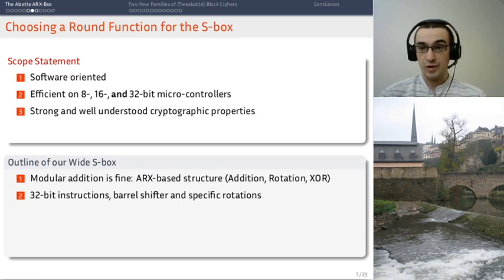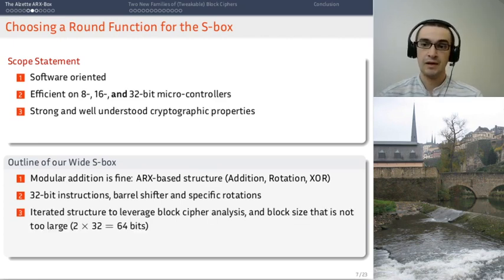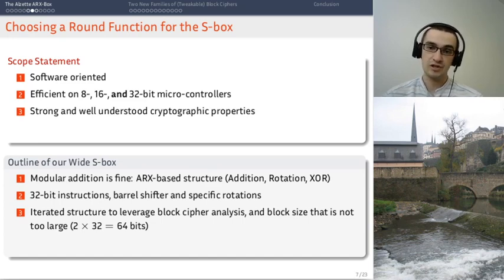We want the cryptographic properties to be both strong and well understood. As I said before we want to use this as an s-box so we have to know what it does. And that means we are going to have to use an iterated structure. Because then we can leverage the literature on the analysis of block ciphers. If we build our s-box like a small block cipher then we can analyze it like a small block cipher. And we know how to do that.